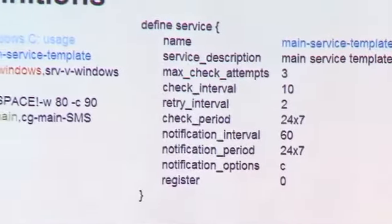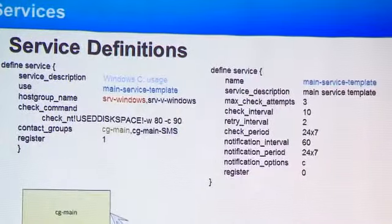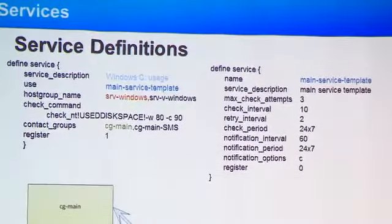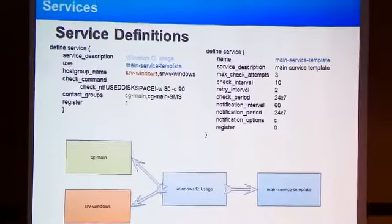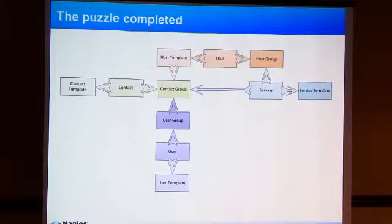This is an example service definition. We've got a service template, max check attempts, retry intervals, and our service Windows C usage. Our Windows servers have C usage and our virtual Windows servers have C usage, so this check belongs to both of those. We care about if it's above 80 or 90%. You can also see that CG main is defined here. The reason I do this on the actual service object rather than the template is because the services change a lot who owns them. Hosts, not so much, but your actual services, on some servers I have 10 different owners on a single server depending on which service it is.